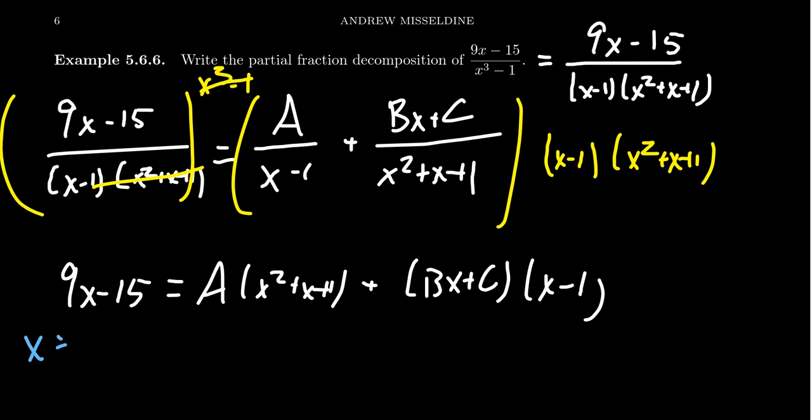If we take x equals 1, that'll annihilate B and C at the same time. So we plug in 1 here and get 9 minus 15 on the left-hand side, which equals negative 6. On the right-hand side, you get 1 plus 1 plus 1 for the coefficient of A, so you get 3A. Dividing both sides by 3, we end up with A equaling negative 2. That's the first observation.